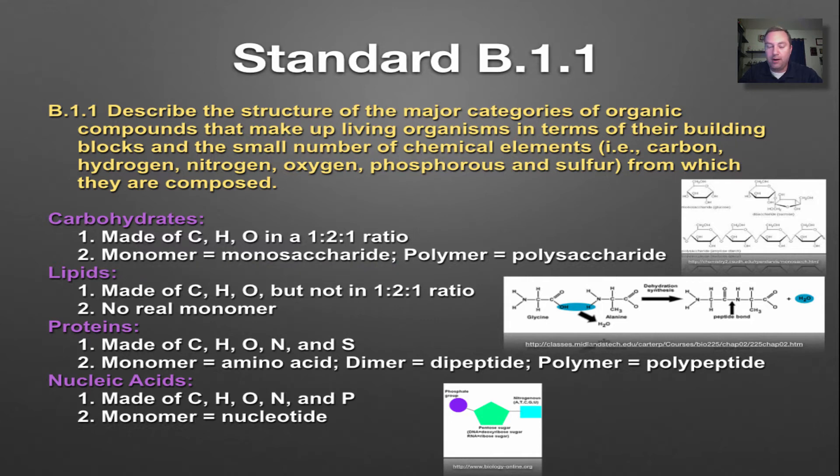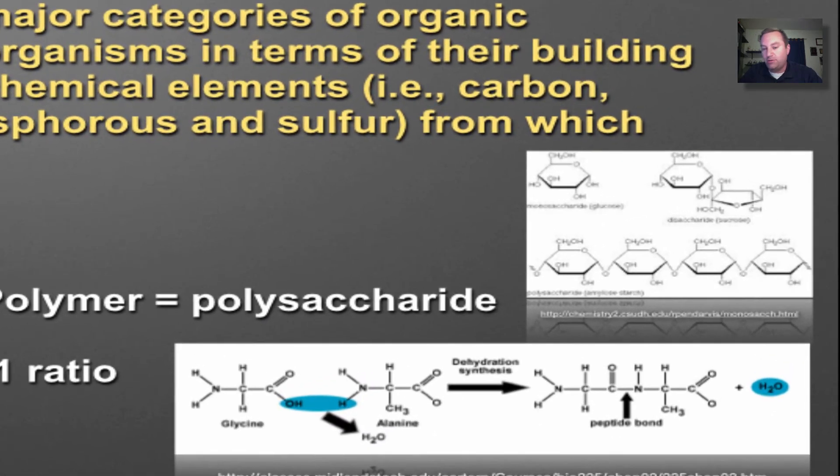If you start hooking your monosaccharides together in a process called dehydration synthesis, you're going to create polymers, which are called polysaccharides. If you look over here in this picture to the right, you see a single monosaccharide at the top, and then towards the bottom, you're going to see a polysaccharide.